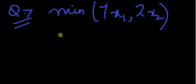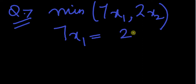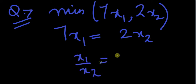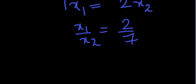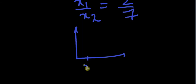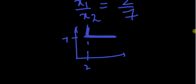Let's solve: 7x1 is equal to 2x2, and this means x1 by x2 is equal to 2 by 7. So if I solve this, when x1 is 2, x2 should be 7, and this is how you get your kink point — this is the indifference curve.